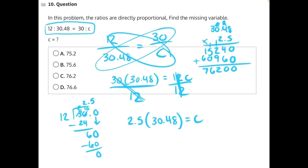Then we just need to count up our decimal places. 1, 2, 3, and apply that to our answer. 1, 2, 3, and that will give us 76.2, making C our correct answer.